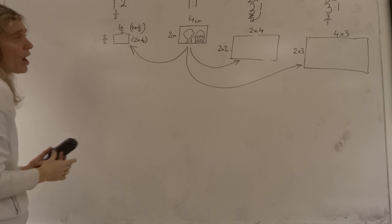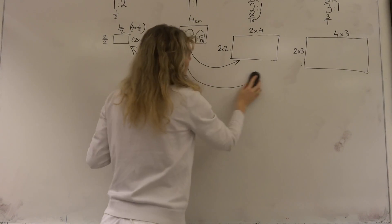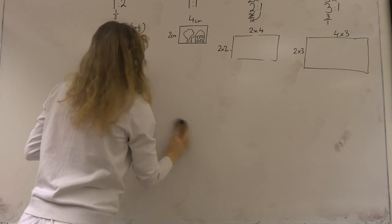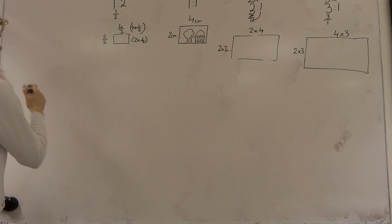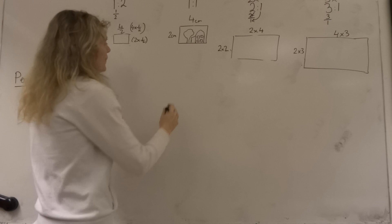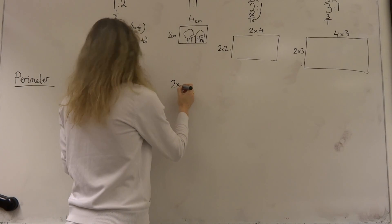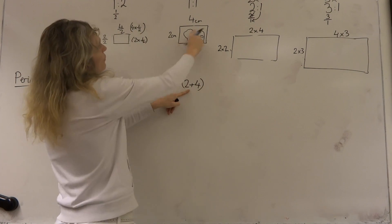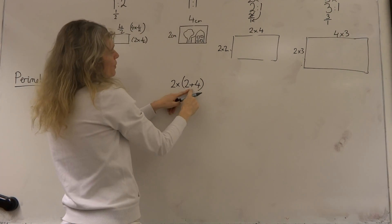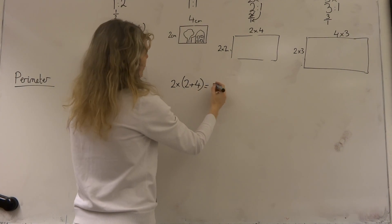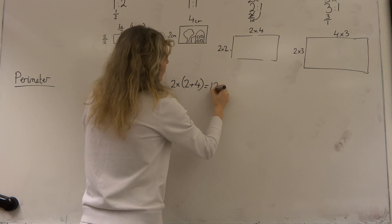Now what's quite interesting, when we understand how we do the scales, is to investigate what happens with the area and the perimeter. The first thing we'll do is look at the perimeter of the original one. It's two times two plus four — half of the rectangle is four plus two, which is six, and double it gives us the whole perimeter. So here we get a perimeter of six times two, twelve centimetres.